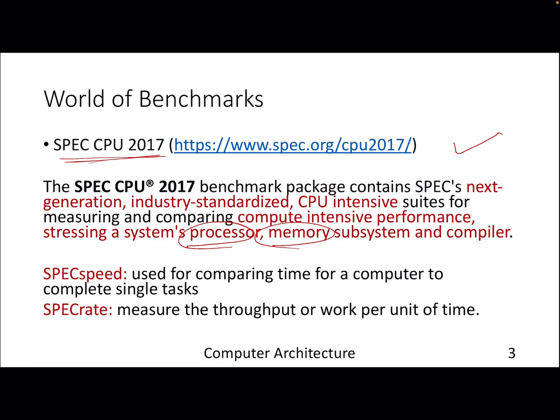If you want to compare the performance of two commercial machines already available in the market, you can just look at their SPEC score and see how they perform with respect to SPEC performance. It comes in two avatars: one is SPEC speed, which is a latency-sensitive metric used for comparing time to complete a single task. The second is SPEC rate, which is a throughput or bandwidth metric. Depending on what you want, you can use the benchmarks accordingly.